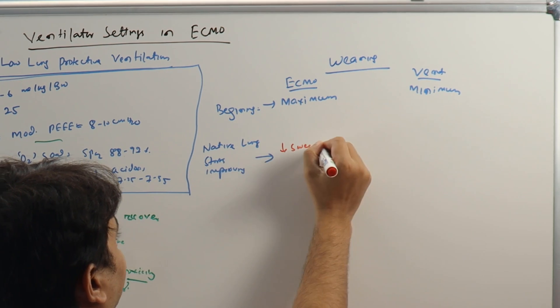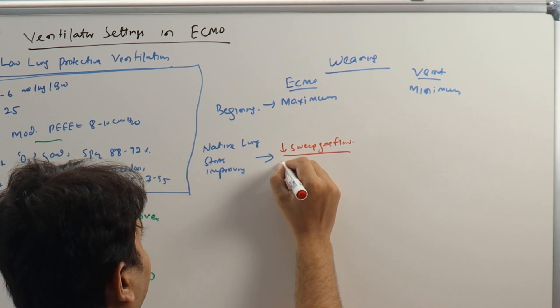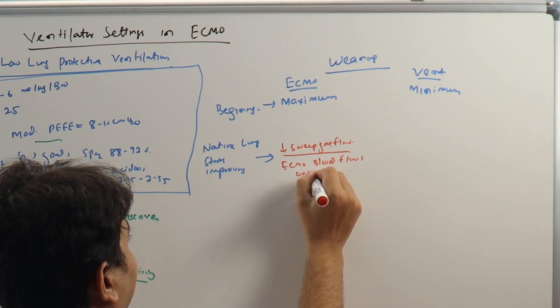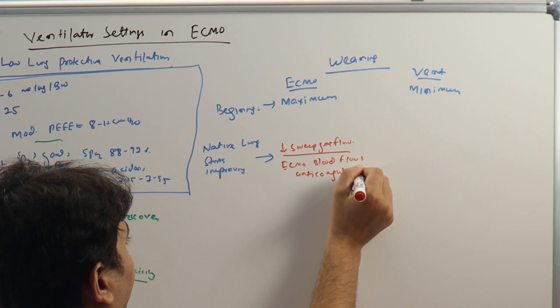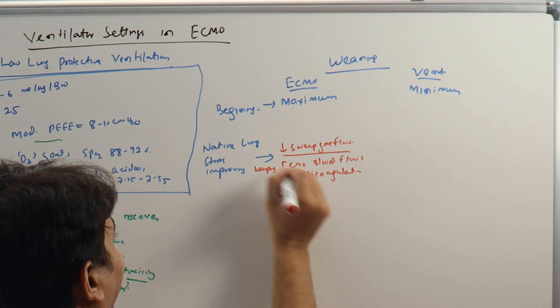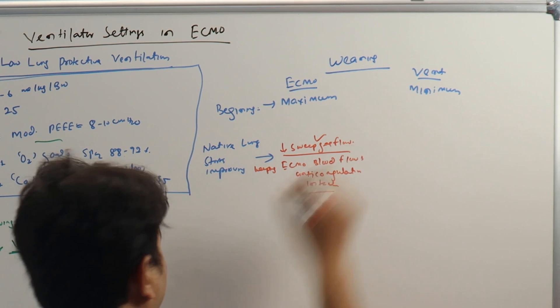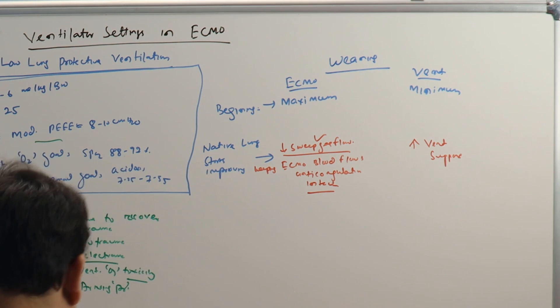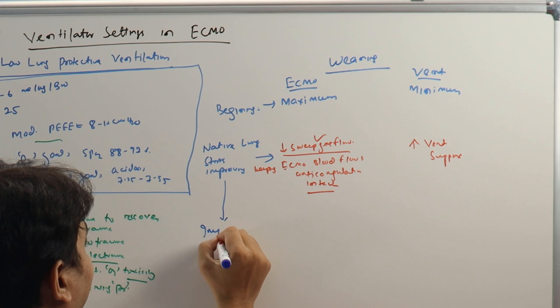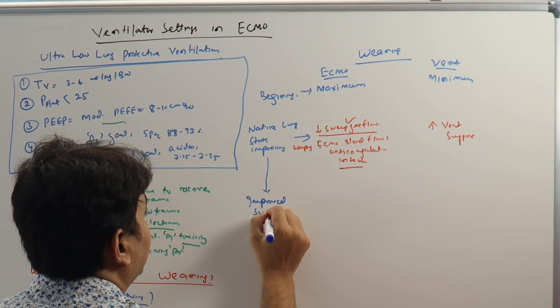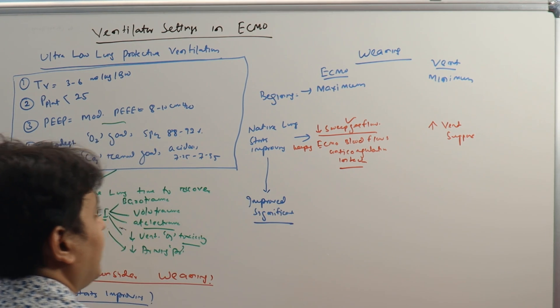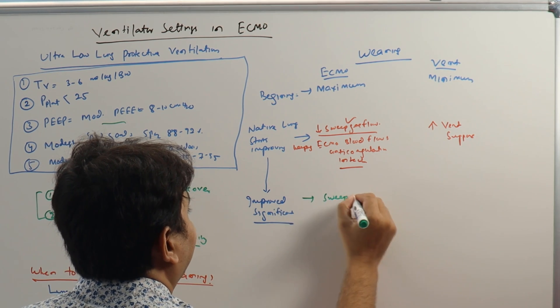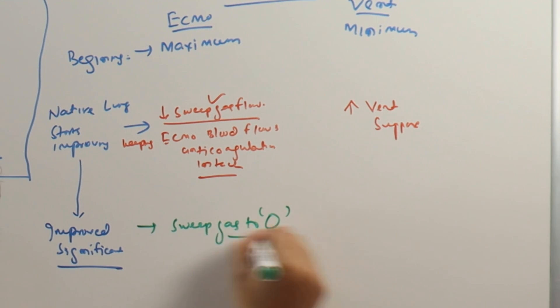How? By decreasing the sweep gas flow but keeping ECMO blood flow and anticoagulation intact. We can decrease the sweep gas flow and at the same time we can increase the ventilator support. When the native lung improved significantly - that is your clinical decision, every day you are seeing the patient - the compliance has improved significantly.